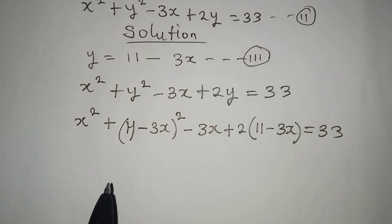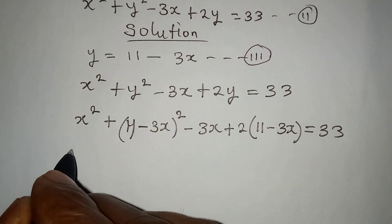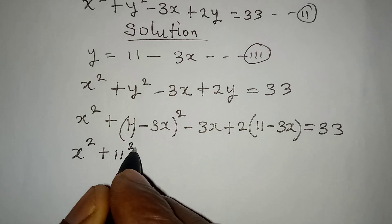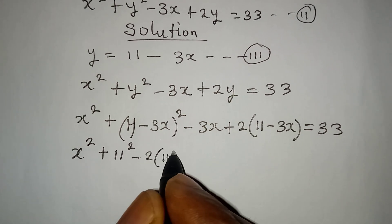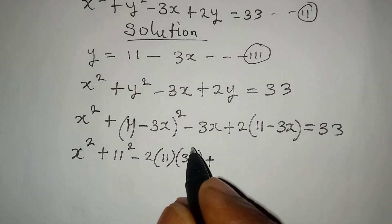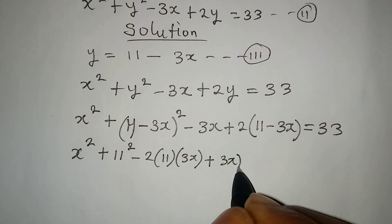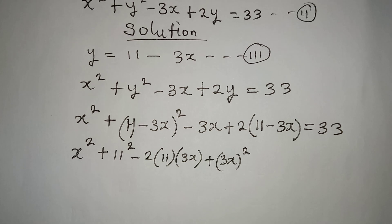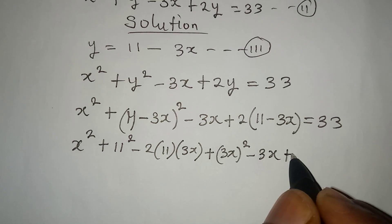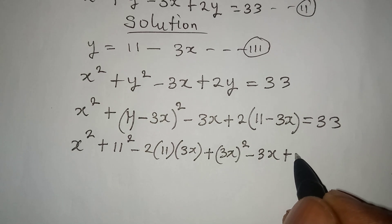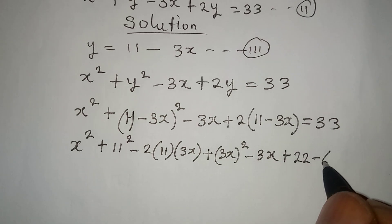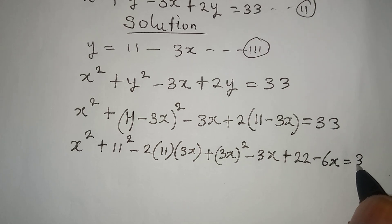We are going to expand what we have. So we have x squared plus 11 squared, minus 2 times 11 times 3x, then plus 3x squared. Then we have minus 3x plus 2 times 11, which is 22, minus 2 times 3x, which gives us 6x. The whole of this is equal to 33.